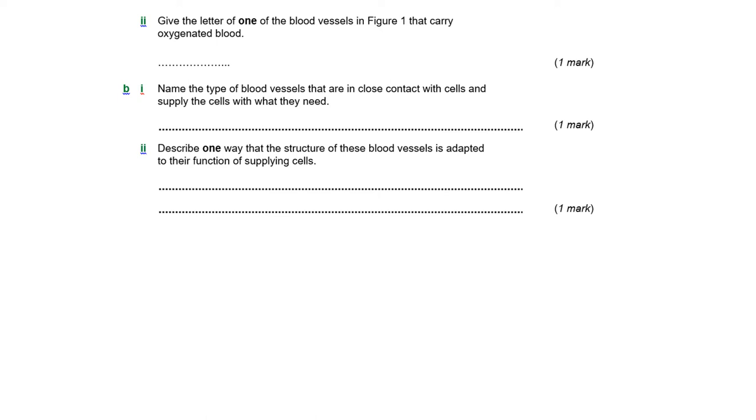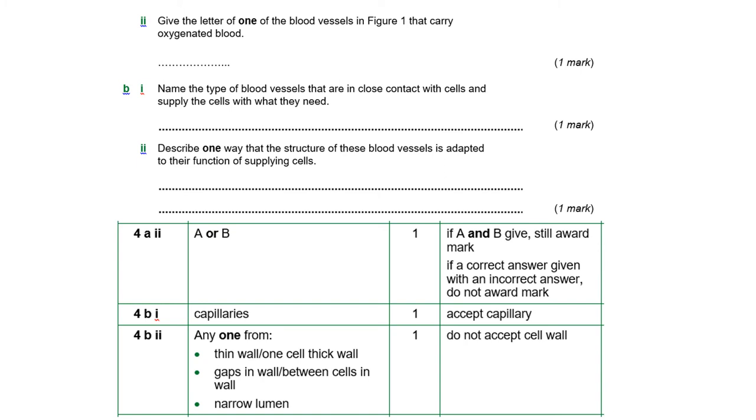So one of those blood vessels you've just named that carries oxygenated blood, it's either A or B, it has to be one that's been to the lungs. So it's going to the lungs, from the lungs back to the heart, or going from the heart round to the body. So A or B. The type of blood vessels that are in close contact with the cells are the capillaries, the really tiny ones. And then it wants you to describe one way that the structure of blood vessels are adapted to help with their function. So this is things about capillaries. They're thin, they're one cell thick, either of those will get you a mark. They've got gaps between the walls so that things like the blood plasma and the dissolved food can leak out and the waste products can leak in. And they have a very narrow lumen, they're about one, can just about fit a red blood cell in, which slows things down and allows the gas exchange to take place. Okay, so those have to be adaptations of a capillary.